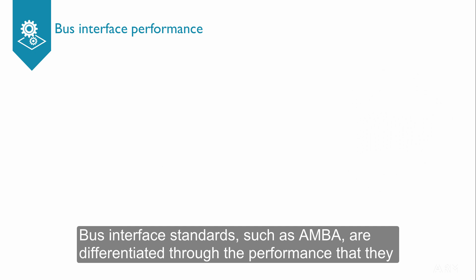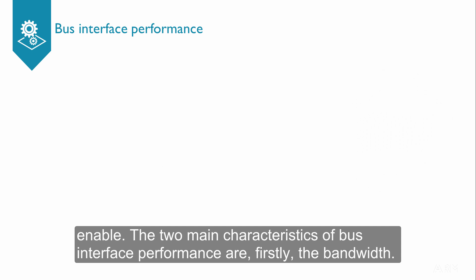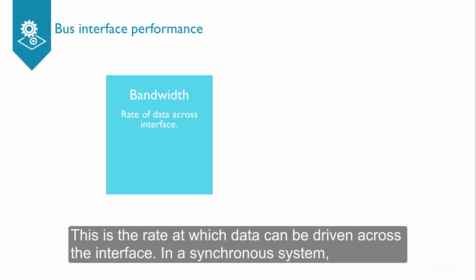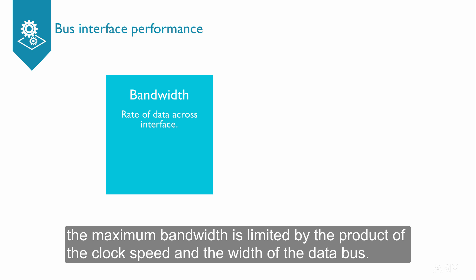Bus interface standards such as AMBA are differentiated through the performance that they enable. The two main characteristics of bus interface performance are bandwidth and latency. Bandwidth is the rate at which data can be driven across the interface. In a synchronous system, the maximum bandwidth is limited by the product of the clock speed and the width of the data bus.